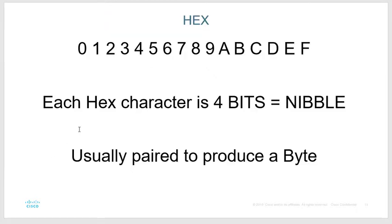Hexadecimal is 0 through 9, and then — since there are no double-digit numbers — instead of having 10, they add A, B, C, D, E, and F. F is 15, the highest you can go. So a MAC address of all F's would be a broadcast. The sequence goes 0, 1, 2, 3, 4, 5, 6, 7, 8, 9, then A (10), B (11), C (12), D (13), E (14), F (15).